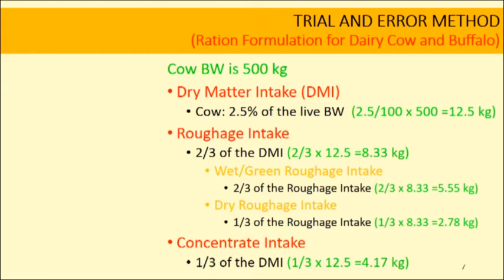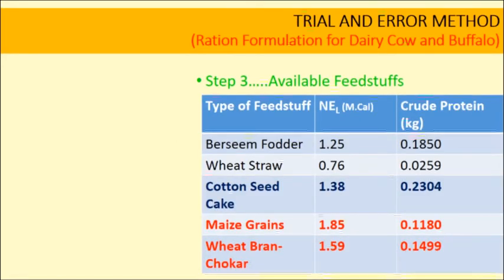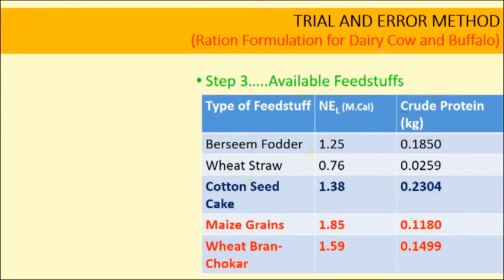Enlist available feed stuffs and their chemical composition — at least those nutrients for which you are balancing the ration. Here we have berseem as green roughage and wheat straw as dry roughage, forming the roughage component. For concentrate, cotton seed cake serves as a protein source, while maize grain and wheat bran are energy sources. Enlist their chemical composition for further calculations.